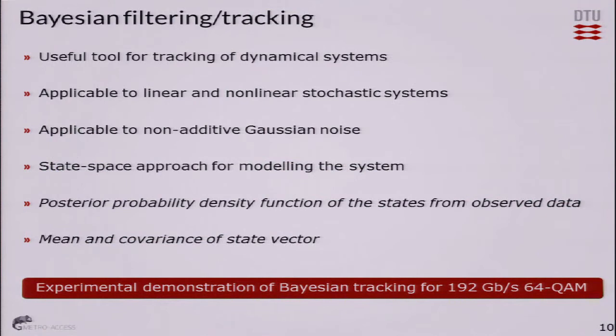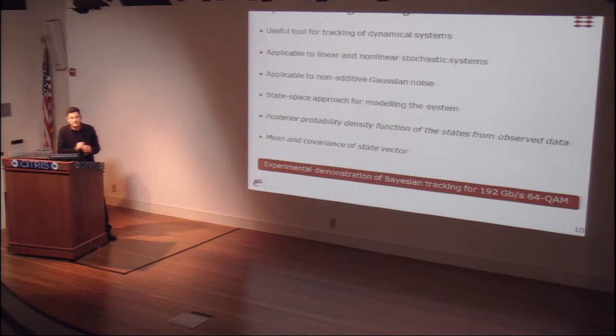Next I will move to the field of Bayesian filtering and tracking. The most commonly used example of Bayesian filtering is the Kalman filter, which can be used in radar to track targets. Everything that has dynamical states can be tracked with a Bayesian filter. They are very useful for dynamical systems and applicable for non-linear systems without additive Gaussian noise. This approach is based on a state space formulation — from observations you recursively estimate parameters, estimating the posterior probability density function of the states at each step.